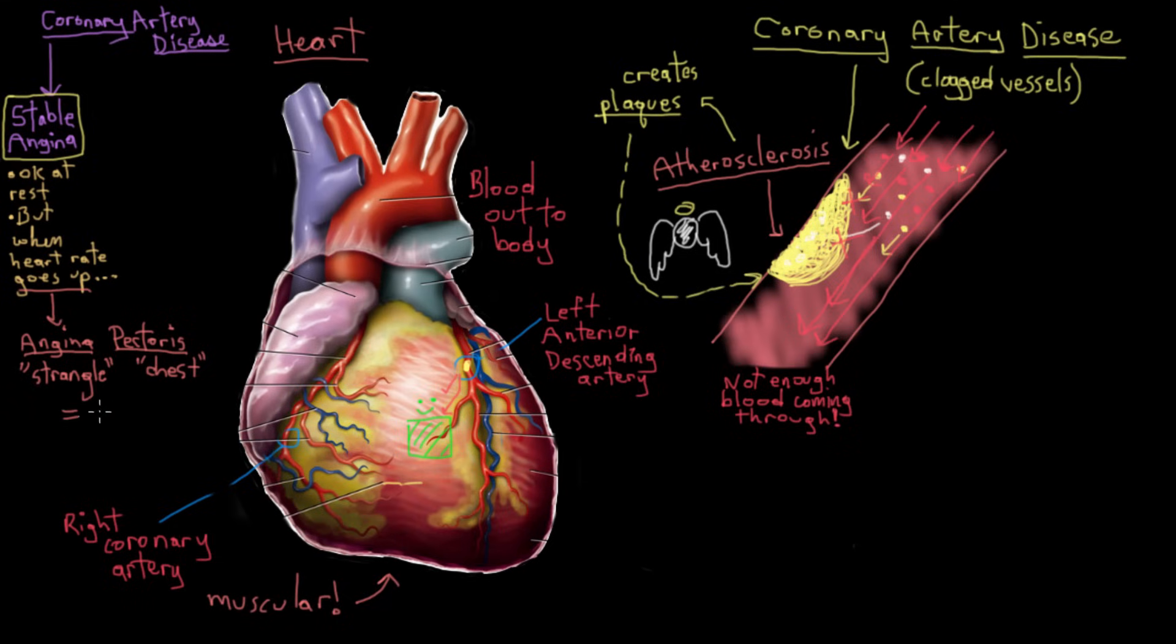So angina pectoris is this tight, strangling feeling in your chest that is brought on when your heart muscle doesn't have enough oxygen. This is reproducible. So if you sort of lower your activity level, if you stop that amazing dance move I'm sure you're doing, or if you stop running for the bus and take a breather, then you're essentially asking your heart to do less work. And when your heart is doing less work, it needs less oxygen.